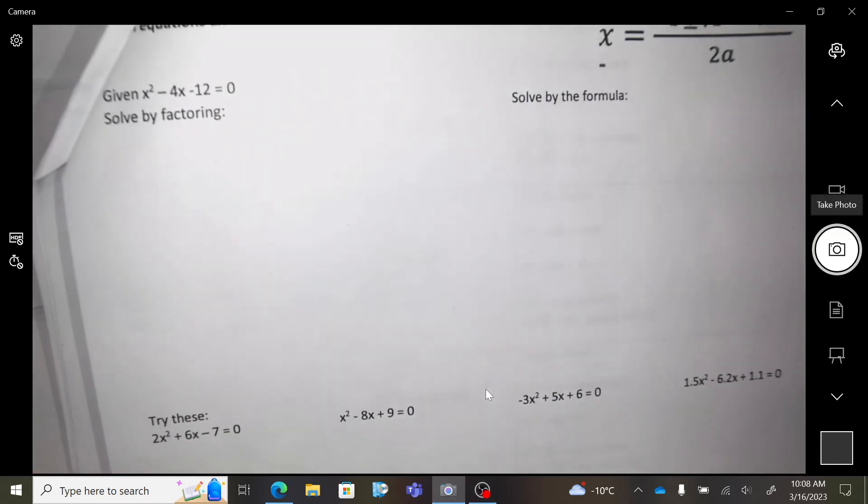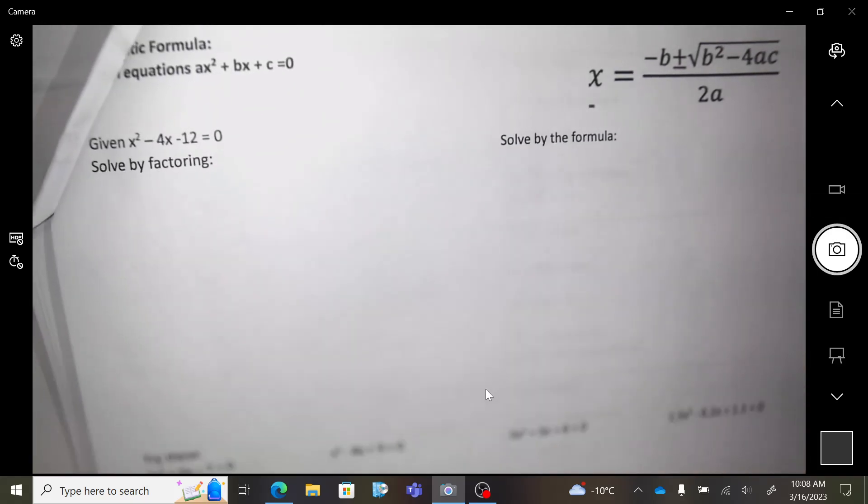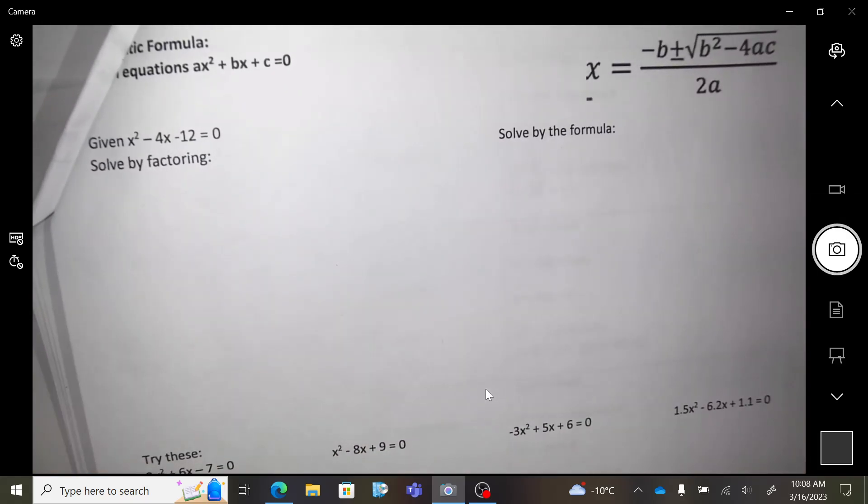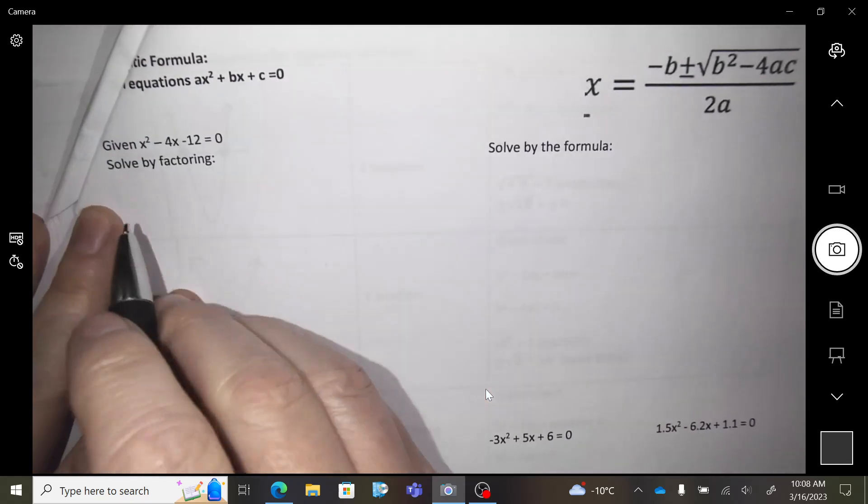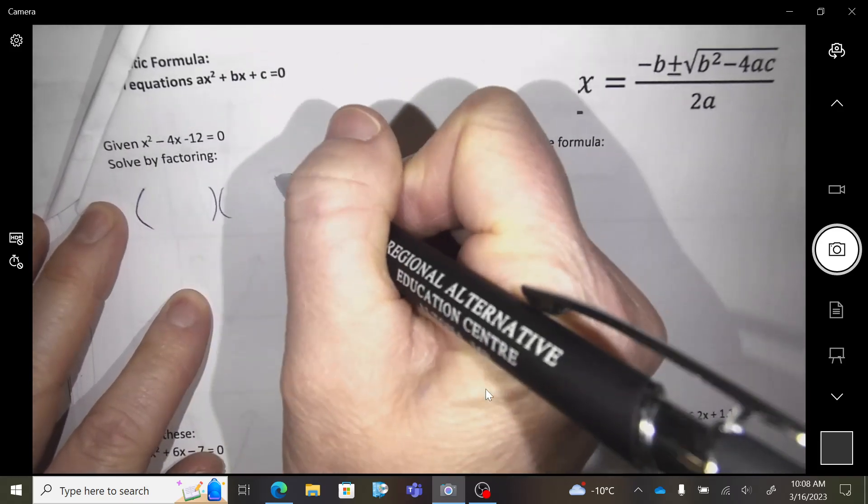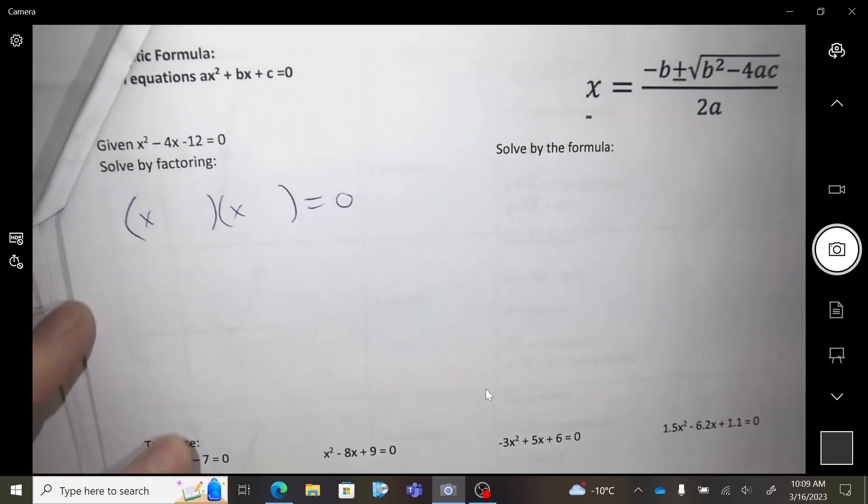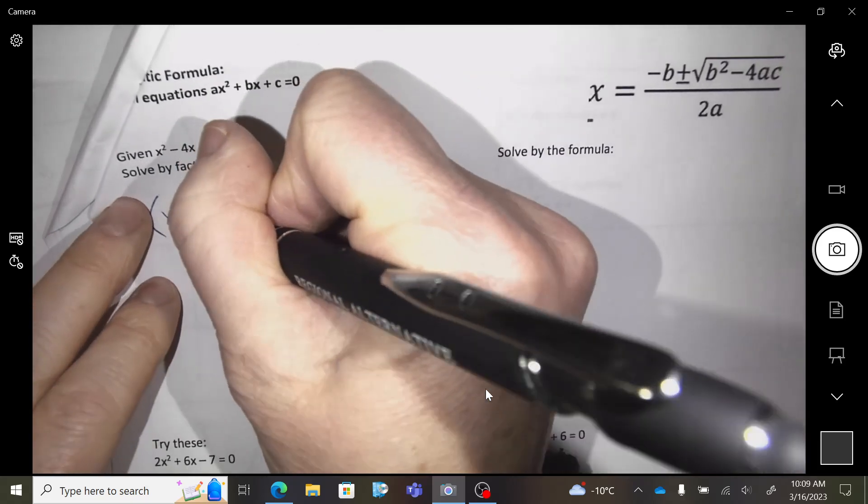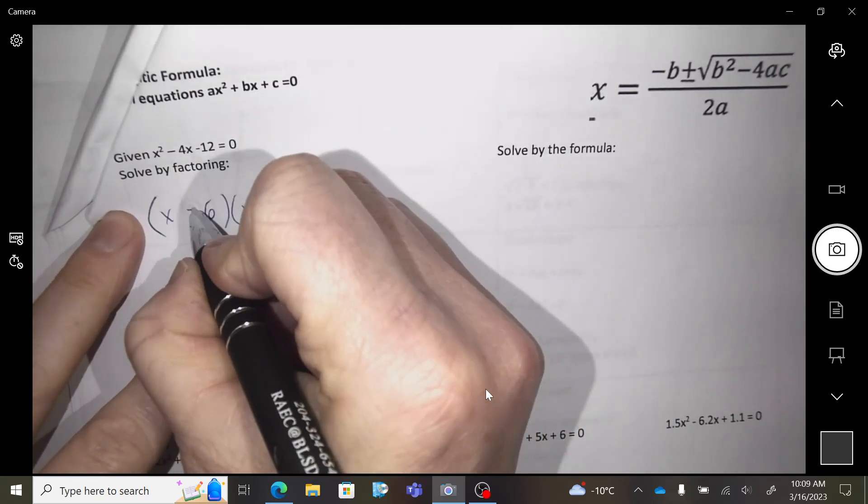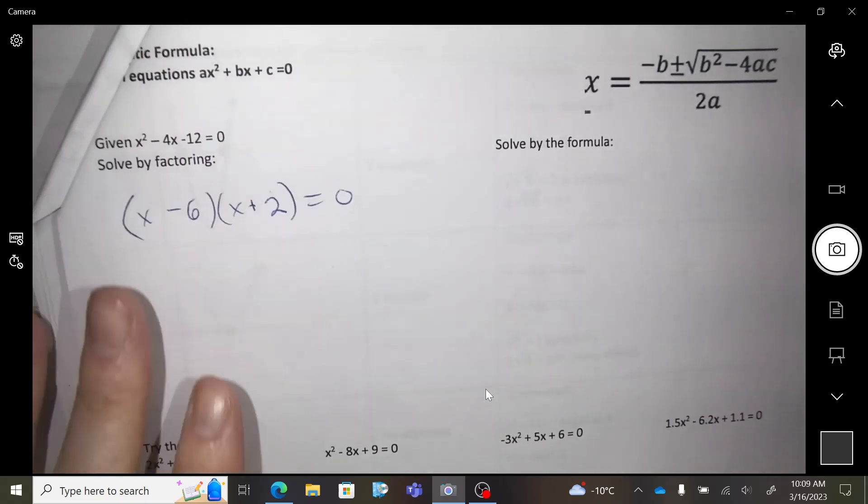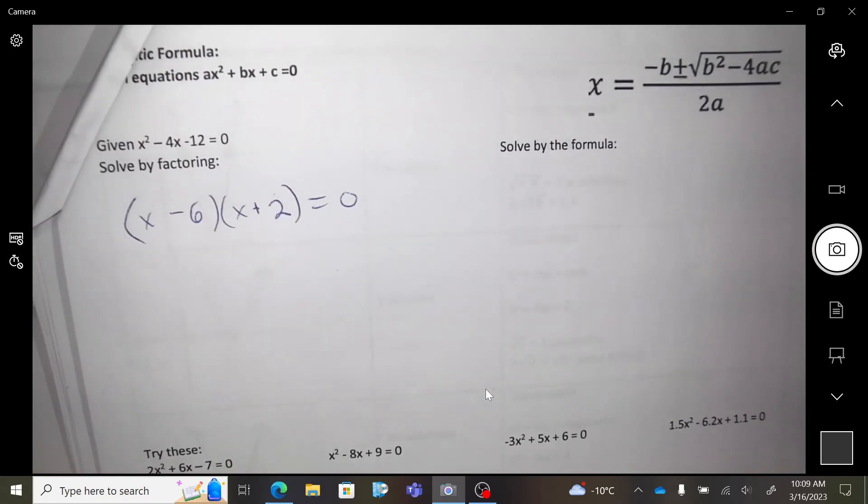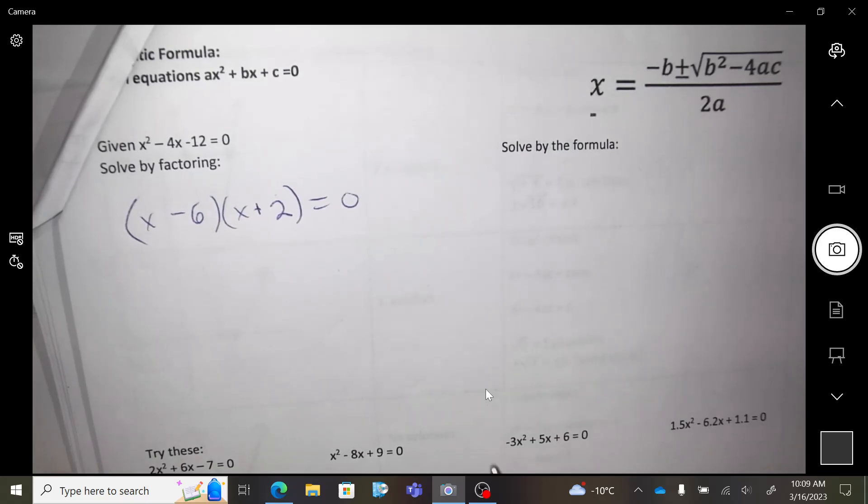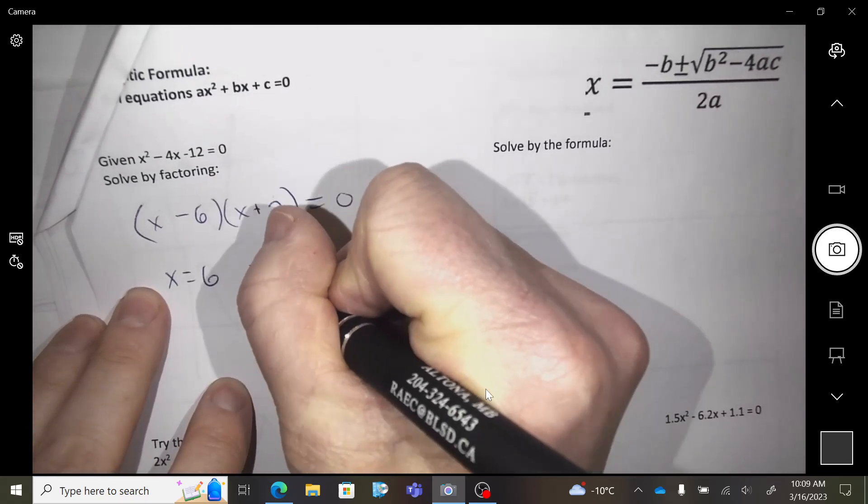Okay, I gave you an equation here that is factorable, so we will factor this. This is a simple trinomial, therefore two brackets, x times x. Multiplies to 12, adds to negative 4. Get your numbers that will multiply to 12: 6 and 2. I need a negative 4.